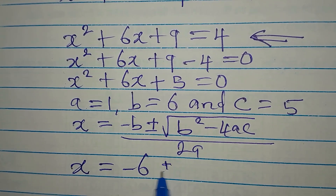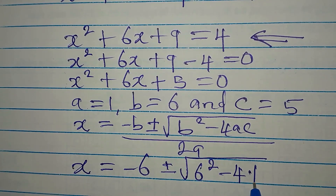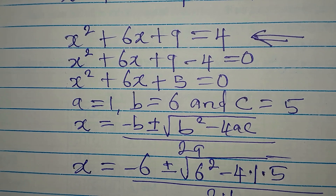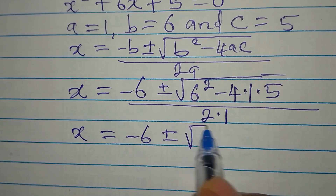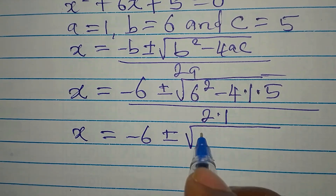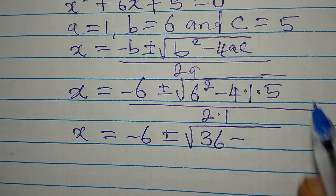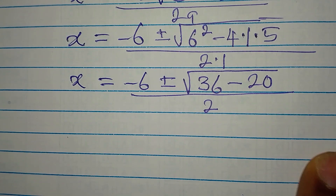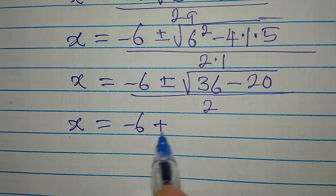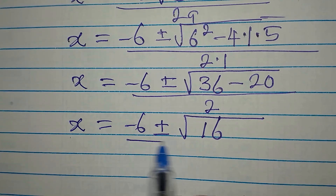Now let us substitute into this formula. Our x will be: −6 plus or minus — b squared is 6 squared, minus 4 times 1 times 5, all divided by 2 times 1. So x = (−6 ± √(36 − 20)) / 2, which gives x = (−6 ± √16) / 2.